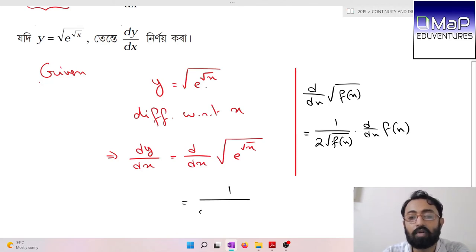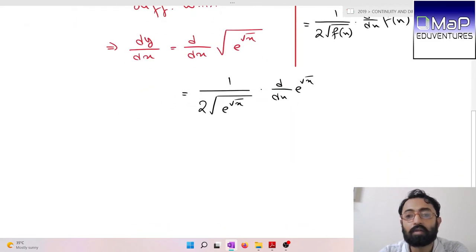So dy/dx = 1/(2√(e^√x)) times d/dx of e^√x.